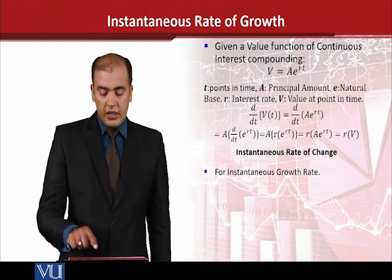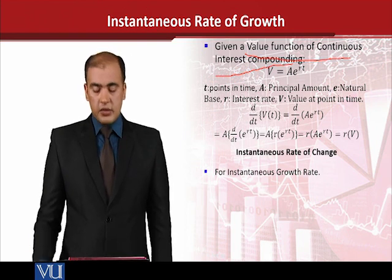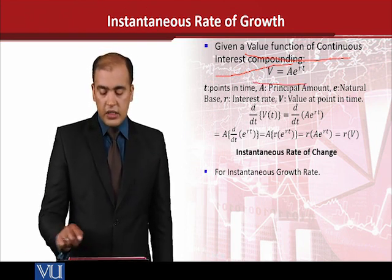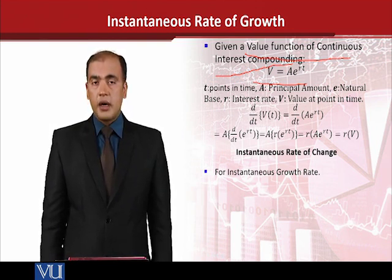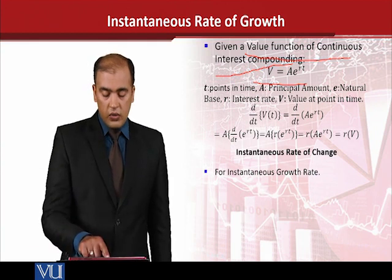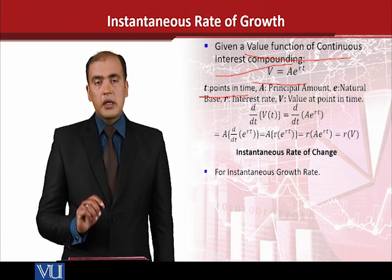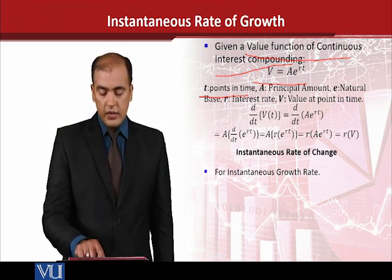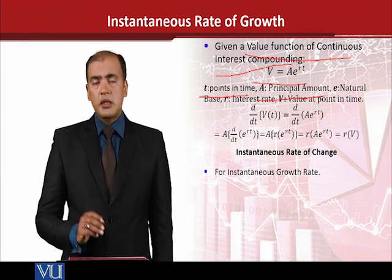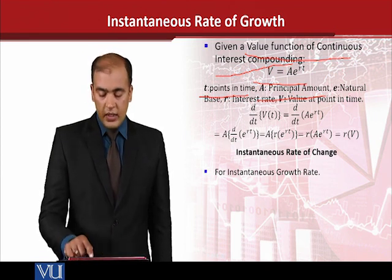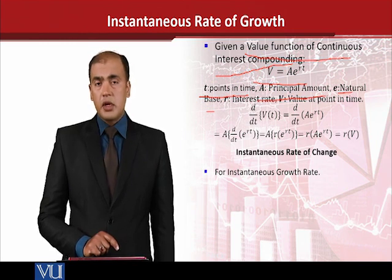We are starting with the value function of continuous interest compounding. The value function is v = ae^(rt). Here t represents time at various points, and a is the principal amount, since we are talking about the interest which is being earned on that principal amount. e is the natural base of the natural exponential functions.